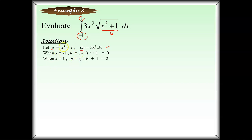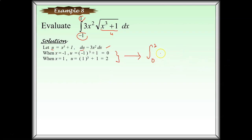When x equals negative 1, u equals (negative 1)³ + 1 = 0. When x equals 1, u equals 1³ + 1 = 2. So the new integration becomes from 0 to 2 of the square root of u du.